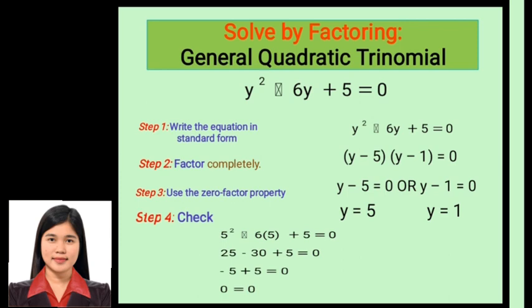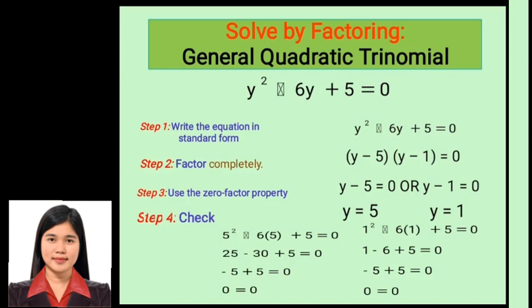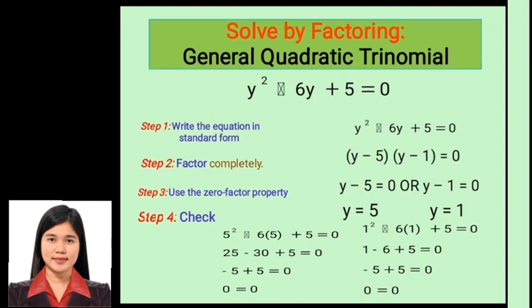Now let's check the second root, y equals 1. Substituting into the original equation: 1² minus 6(1) plus 5 equals 1 minus 6 plus 5. That gives negative 5 plus 5 equals 0. So our second root is also correct.